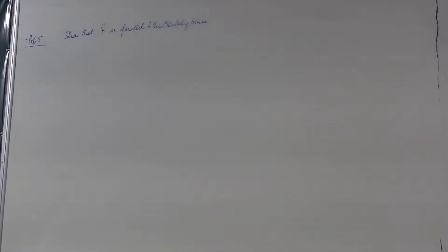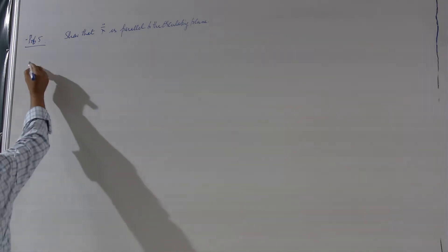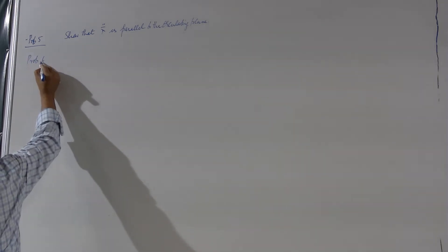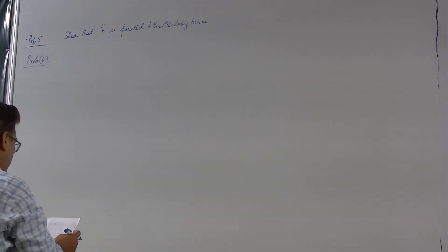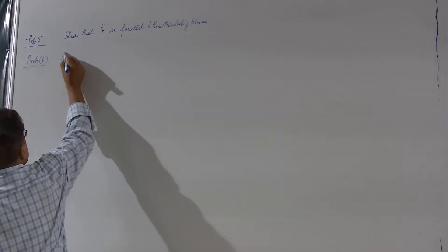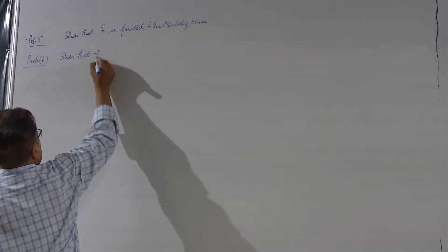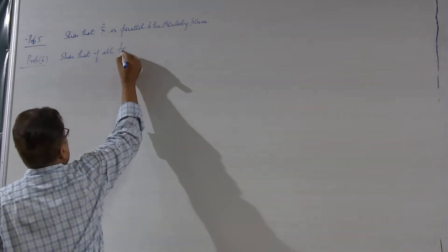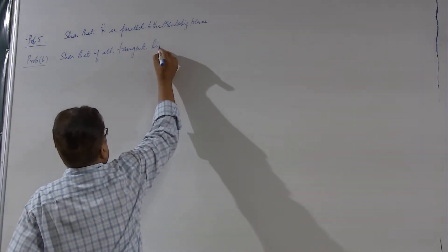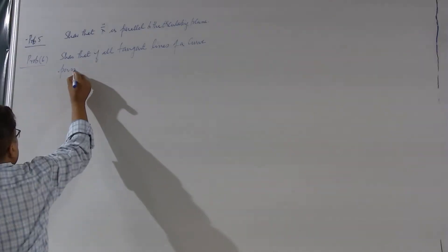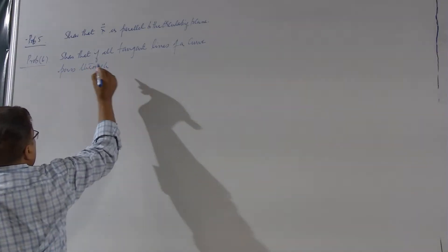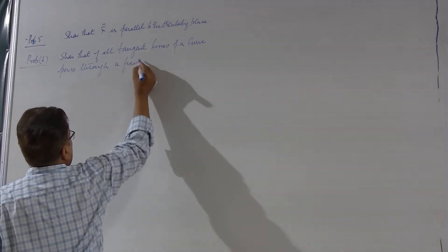This is an important property which we should keep in mind. And then we have problem number 6: if all tangent lines of a curve pass through a fixed point, show that the curve is a straight line.